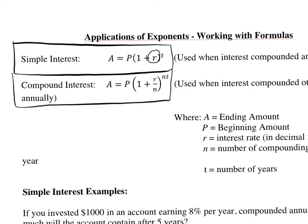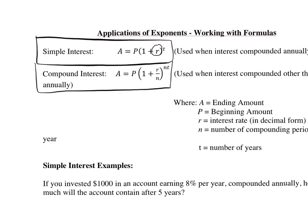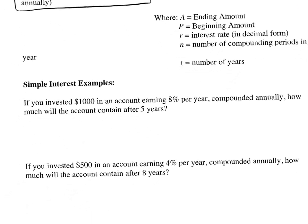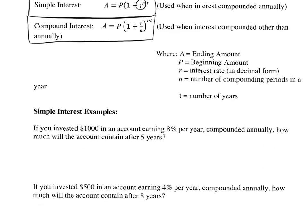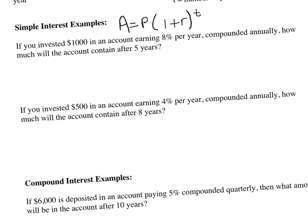Let's begin with our simple interest formula and do some example problems. Remember, simple interest formula is A equals P times (1 plus R) to the T power. If you look at your question, you can determine what A, P, R, and T are.